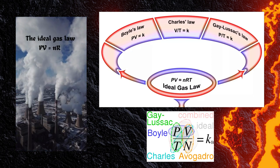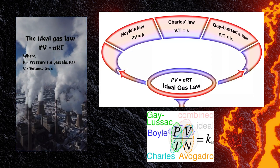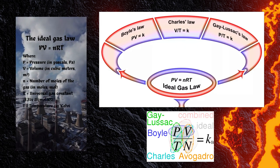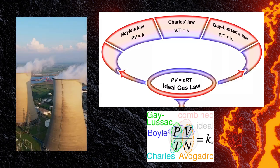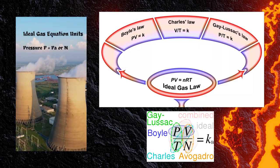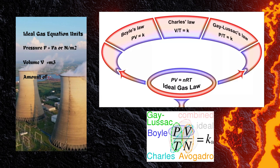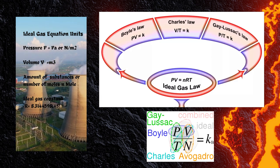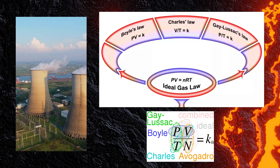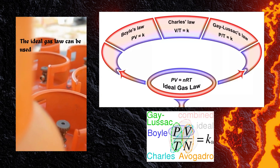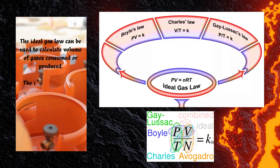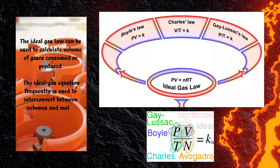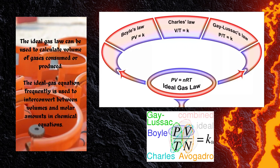Combined: PV equals NRT, where P equals pressure, V equals volume, N equals number of moles of the gas, R equals universal gas constant, T equals temperature. Units: pressure in Pascal or Newton per meter squared, volume equals meter cubed, amount of substance or number of moles. Ideal gas constant R equals 8.314459848 Joule per Kelvin per mole. The ideal gas law can be used to calculate volume of gases consumed or produced. The ideal gas equation frequently is used to interconvert between volumes and molar amounts in chemical equations.